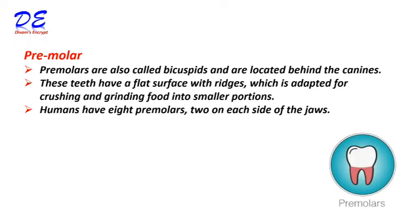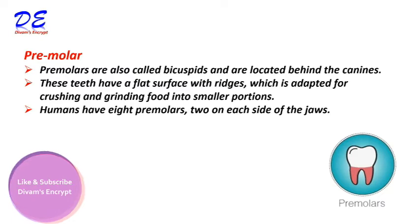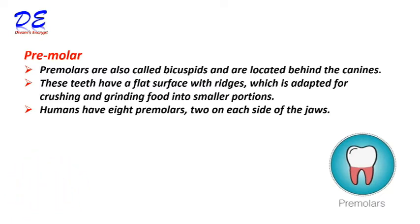Premolars are also called bicuspids and are located behind the canines. They have a flat surface with ridges, which is adapted for crushing and grinding food into smaller portions. Humans have eight premolars — two on each side of the jaws.